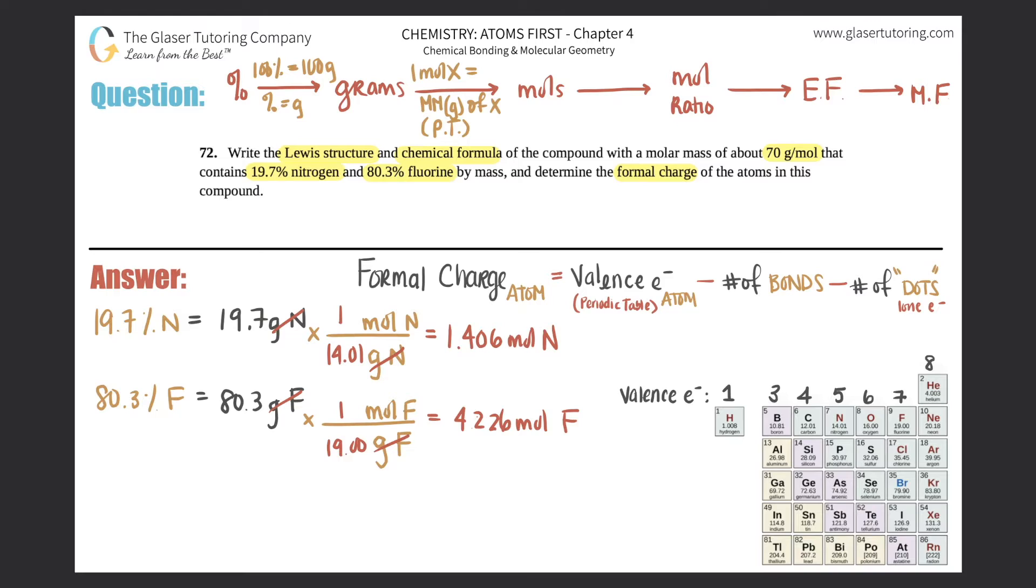Now we are here, but how do we get to a mole ratio? Pretty simple. What you're going to do is look at all the moles that you just found out. So you have 1.406 moles of N and 4.226 moles of fluorine. To get to a mole ratio, all you got to do is divide by the lowest number of moles.